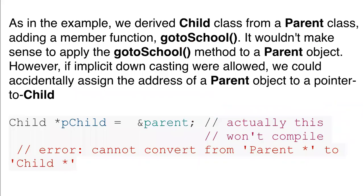Considering our earlier example, we have a derived class named Child and a base class named Parent. The go_to_school function is applicable to Child only, not to Parent. So if we try to cast the reference of the Parent class to the pointer of the Child class, it would allow this pointer to access both the members of the base class as well as the derived class. That's why this casting is not allowed, and at compile time it will give an error if an implicit cast is used.